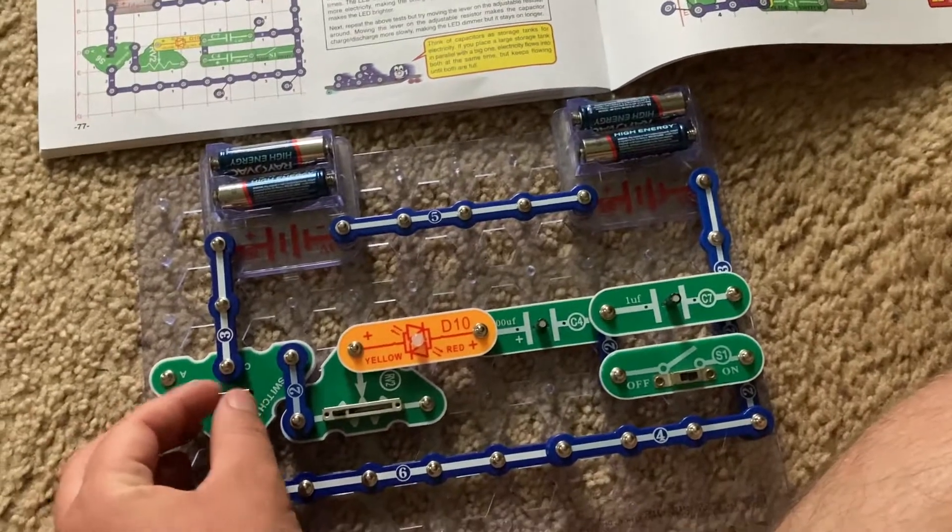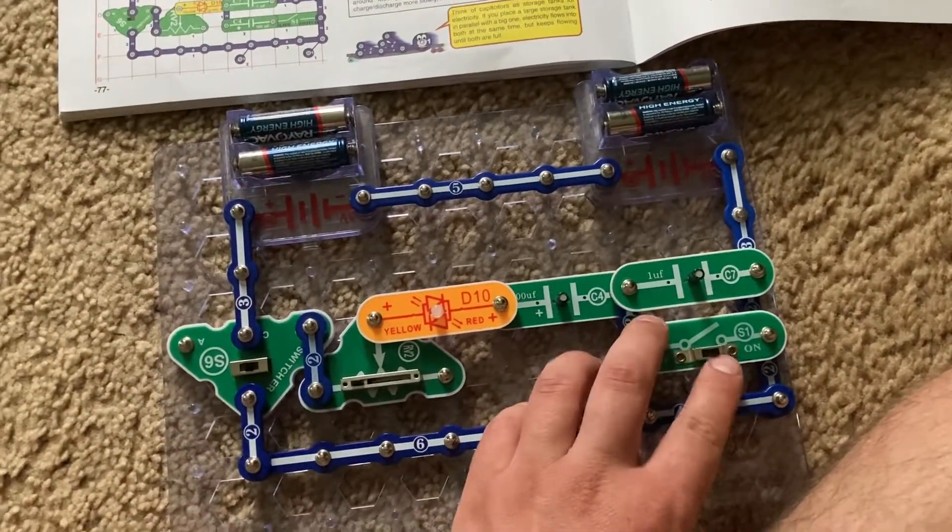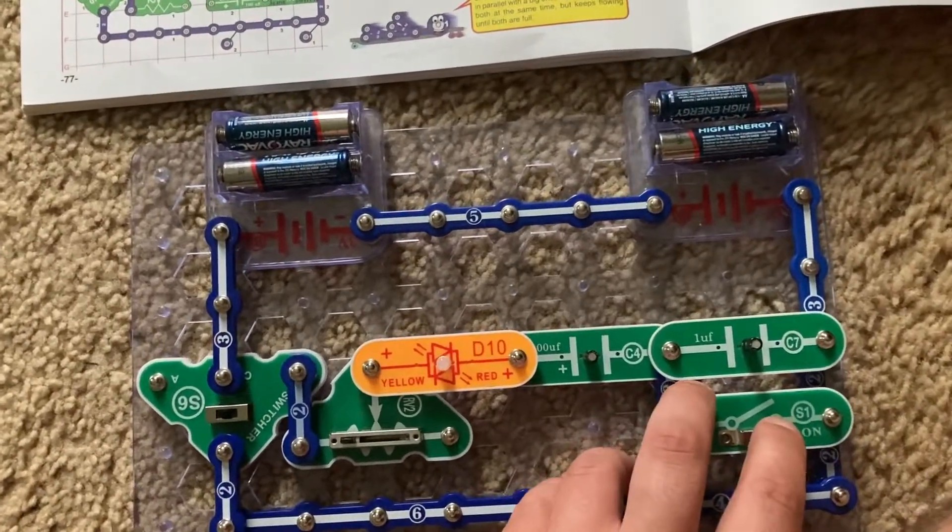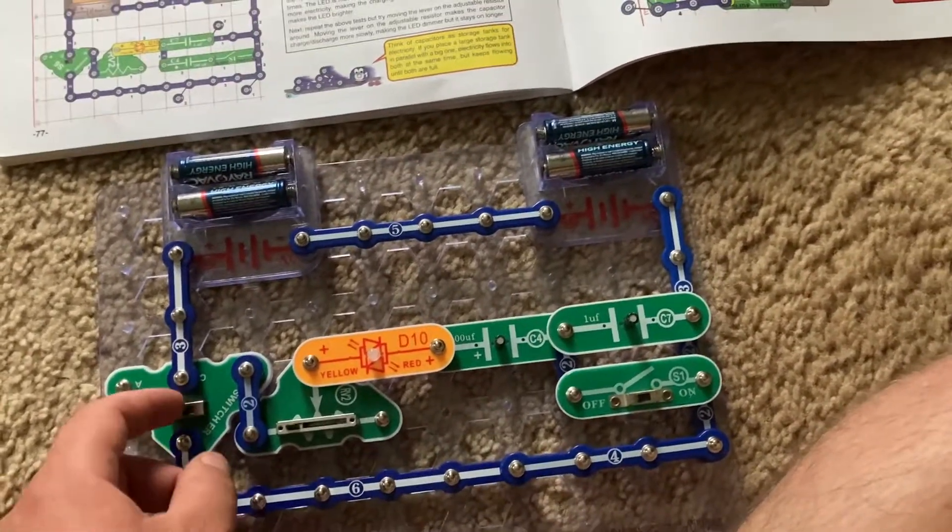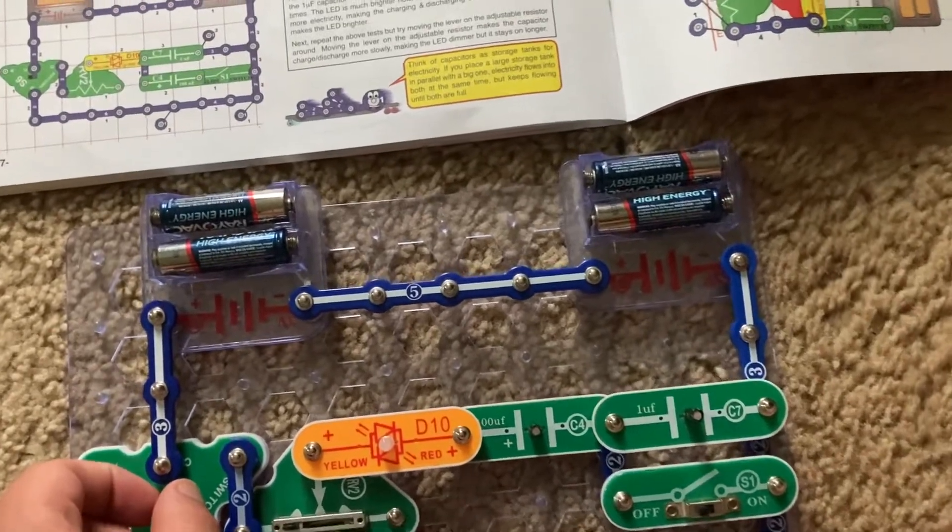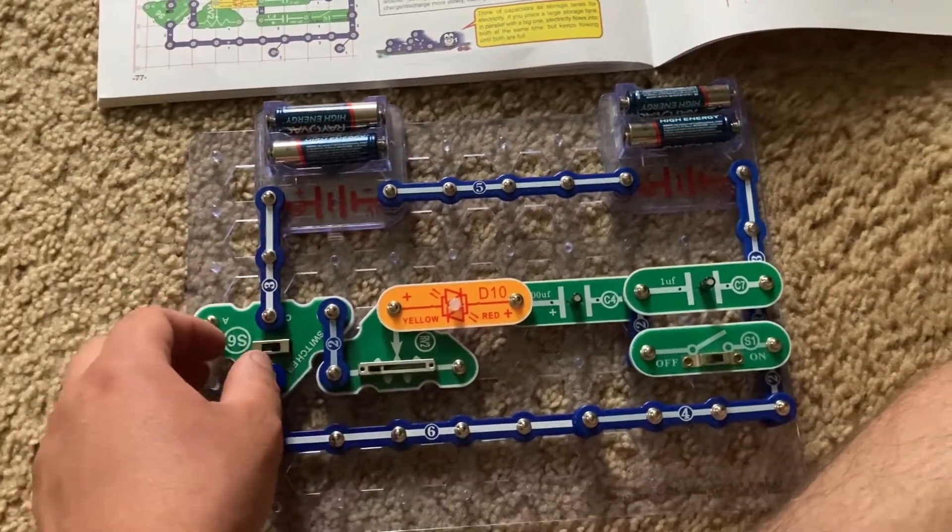Now with the switcher back to the middle position, I'm going to turn off the slide switch and this will connect the C7 capacitor in series with the bicolor LED and I'm going to repeat the switching procedure.